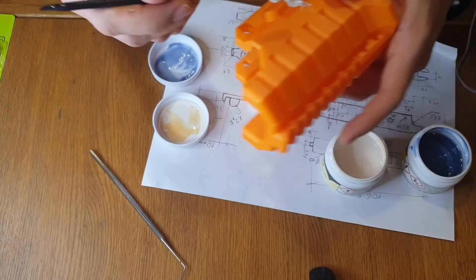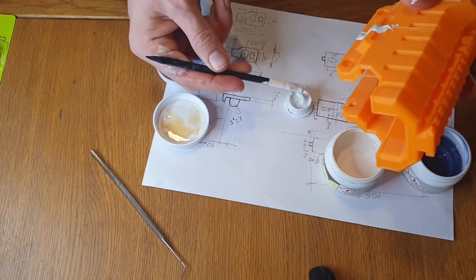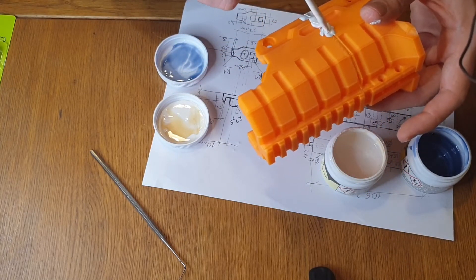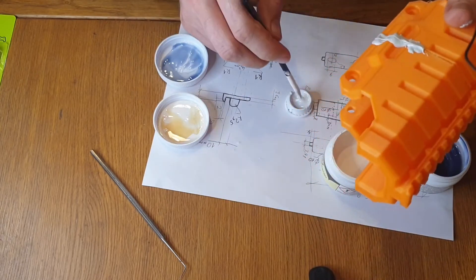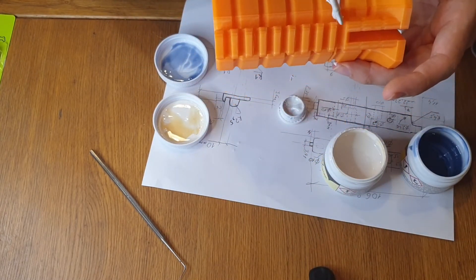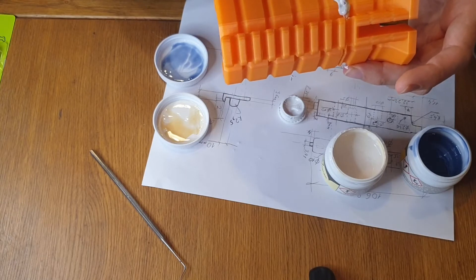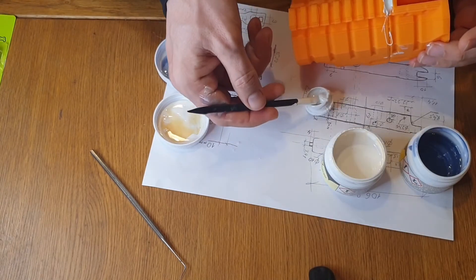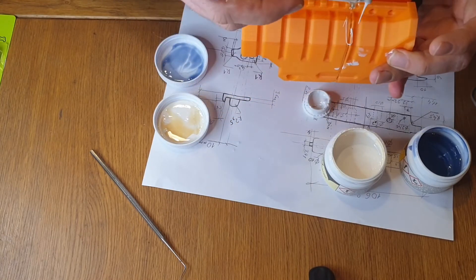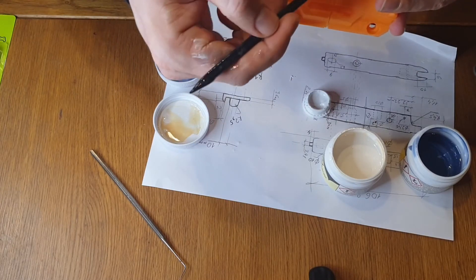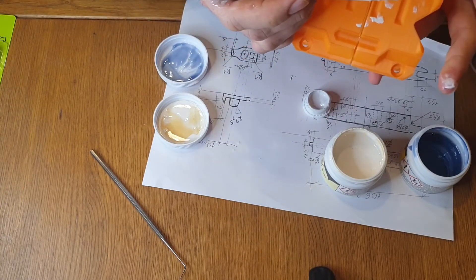Basically using it as a filler. When it's hardened, it's supposed to be harder than the plastic, so it all adds to the strength of the overall shell here. And of course, it's going to be dirty as hell.